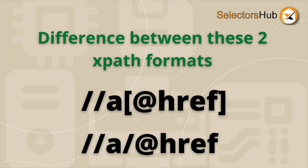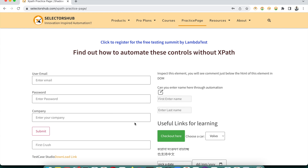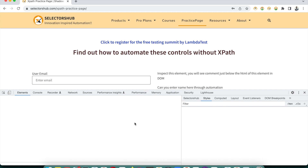So let's understand what is the difference between double forward slash, then 'a', square bracket, at-rate href — and double forward slash, then 'a', forward slash, at-rate href. Basically the formula is: double forward slash, then the tag name, and then square bracket at-rate attribute name.